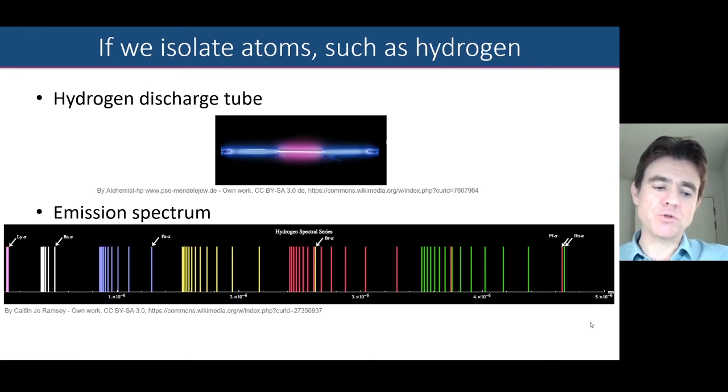So on the one hand, we've got the sun's spectrum revealing reduced intensity at certain wavelengths. And on the other hand, we've got hydrogen demonstrating emission of particular wavelengths.